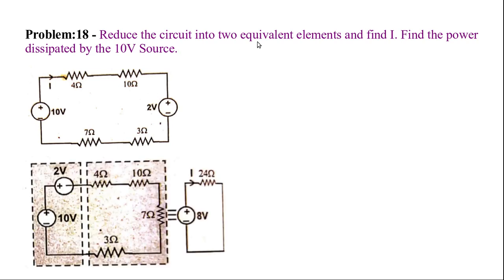We've reduced the circuit. We've added the voltages. The voltage is also plus, so that will be added to give: plus 10 minus 2 equals 8 volts. For the resistors, you can add 10, 20, and 24, giving R equivalent equal to 24 ohms.